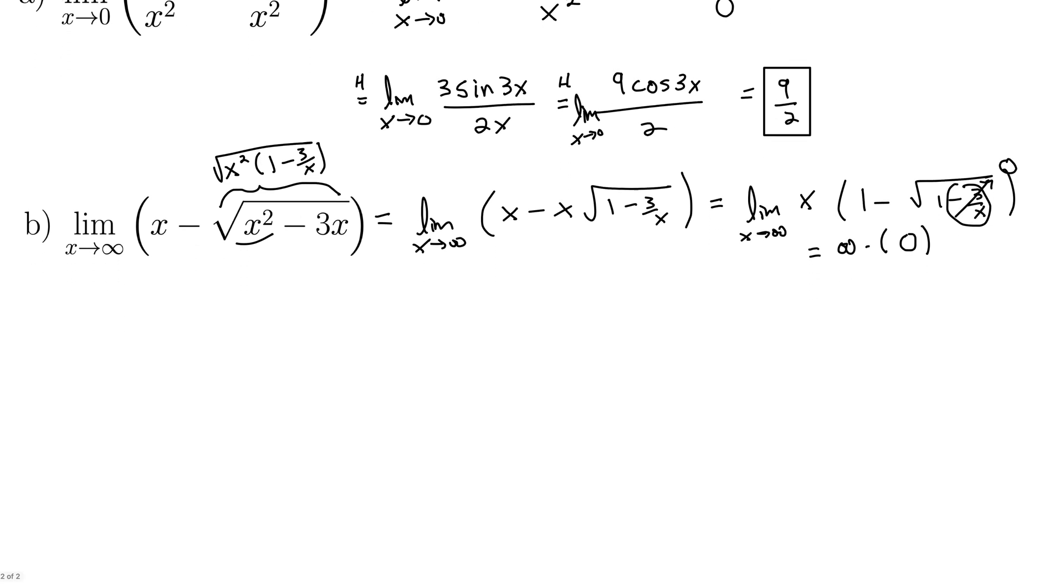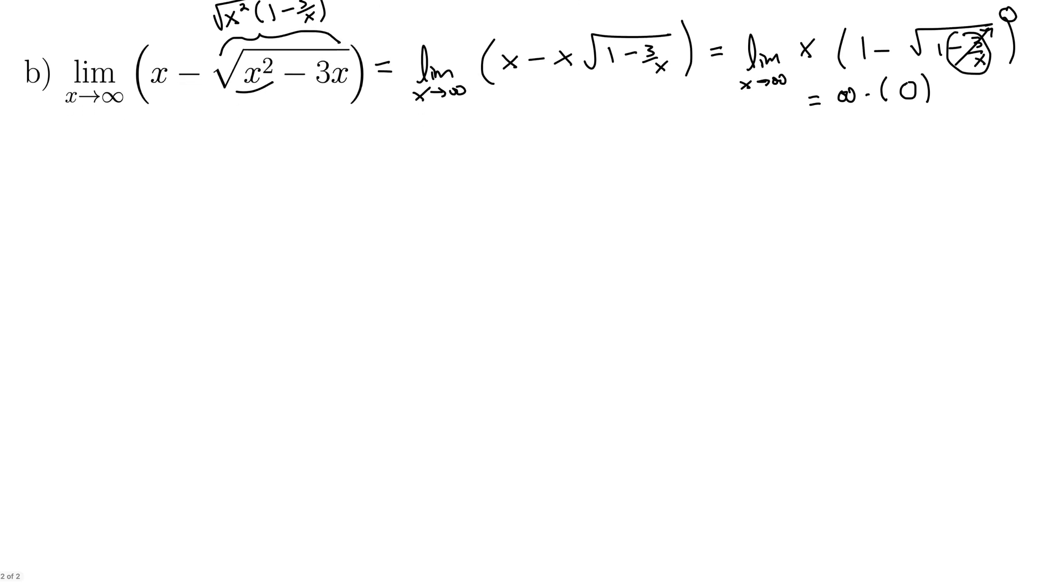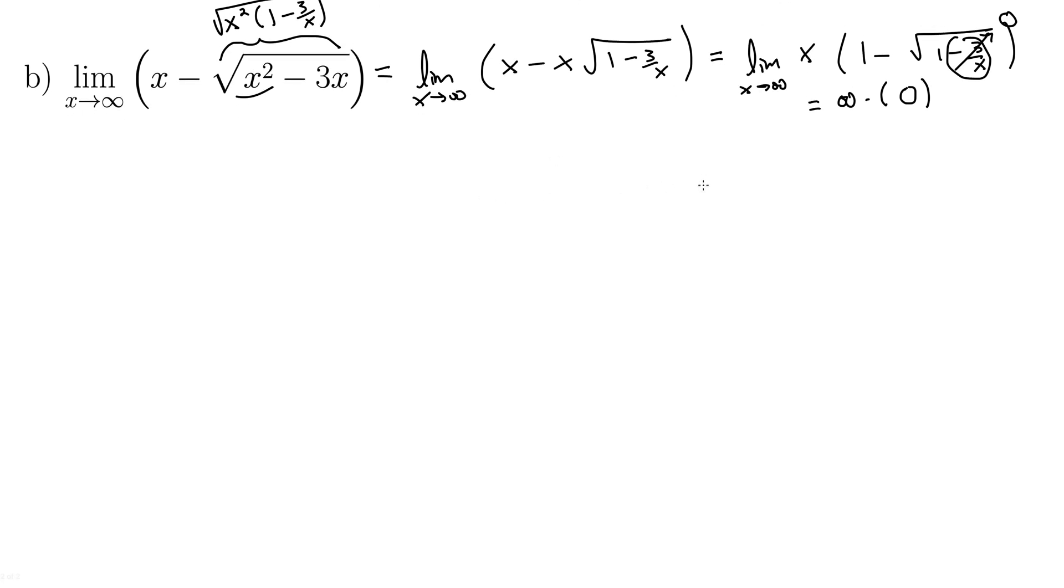Because once we get here, we can force one of the terms down to the denominator by multiplying by the reciprocal. So this is the limit as x goes to infinity of 1 minus square root of 1 minus 3 over x, and then this x comes down to the denominator as 1 over x. Once you get to the form 0 times infinity, that's the trick. You bring one of the terms down to the denominator. Now if we run this out, we get 0 over 0. We can use L'Hôpital's rule.